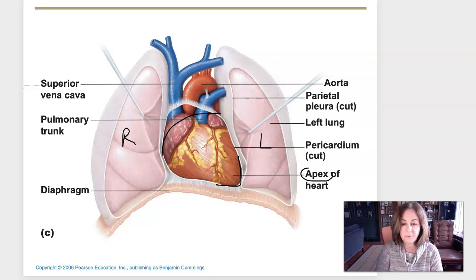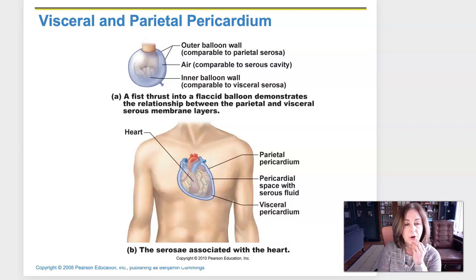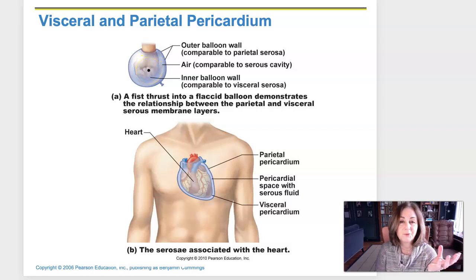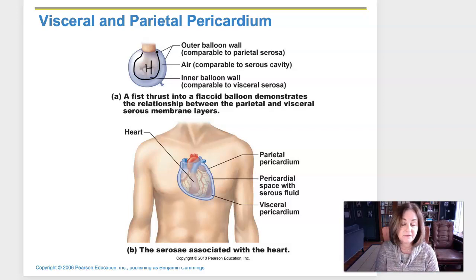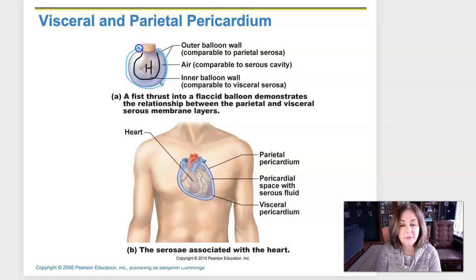Taking a look at this picture from our book, they're drawing an analogy I love — the fist into the balloon. Imagine a balloon not blown up all the way, so you could sink a fist into it. The part of the balloon touching the fist — the fist representing the heart — is known as the visceral pericardium. The visceral pericardium is the actual outside of the heart. It's continuous with the outer layer, which is called the parietal pericardium. The visceral pericardium is the actual outside of the heart; the parietal pericardium is the outer layer.